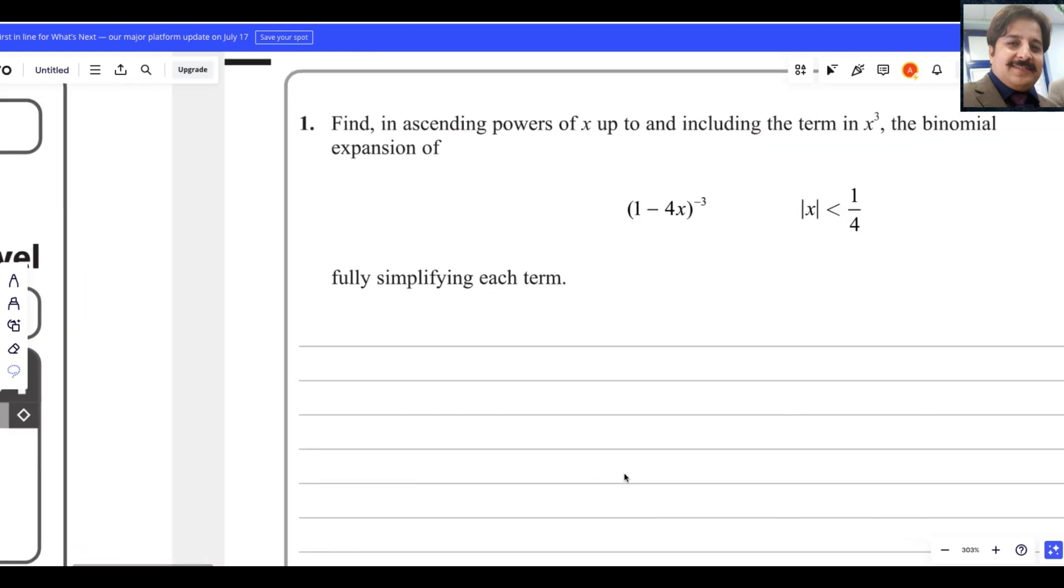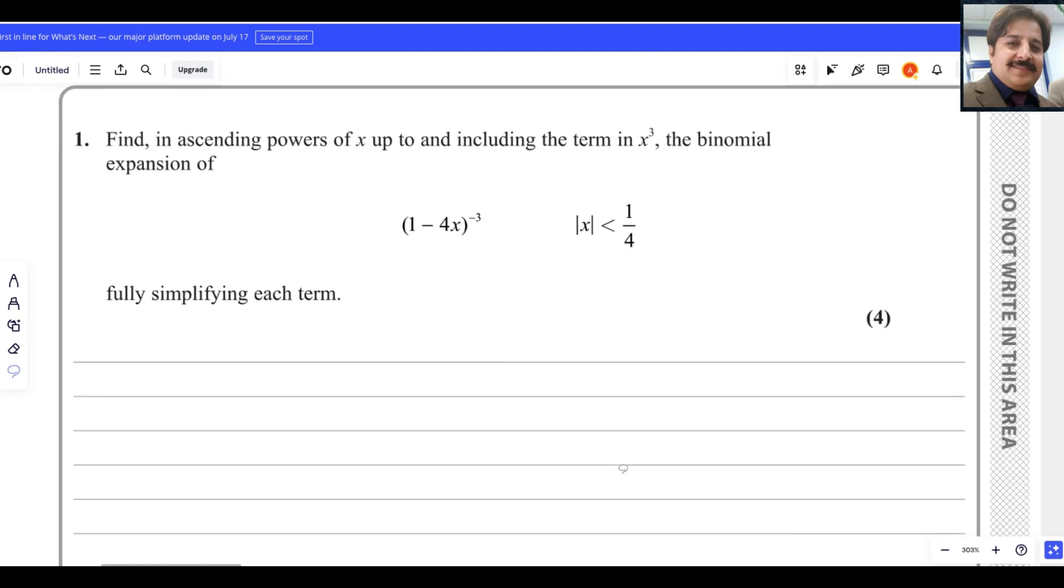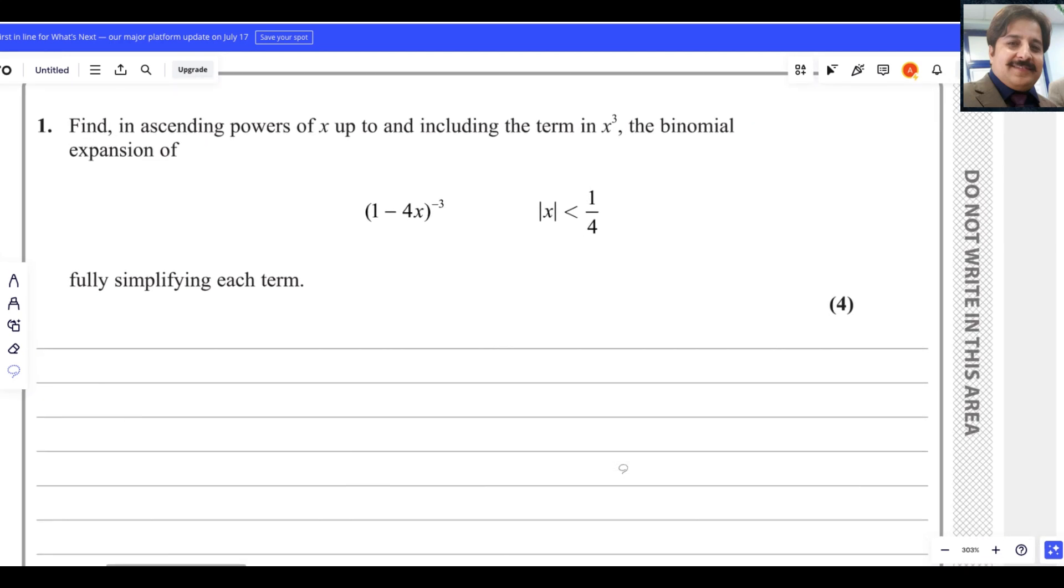Let us start with question number 1. Find in ascending powers of x up to and including the term in x³, the binomial expansion of (1-4x)^(-3) where |x| < 1/4, fully simplifying each term.